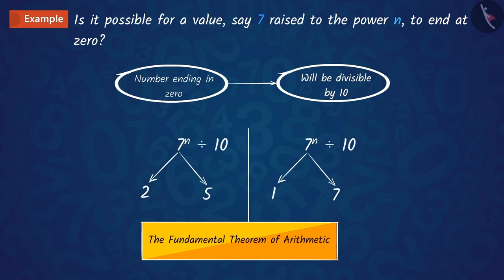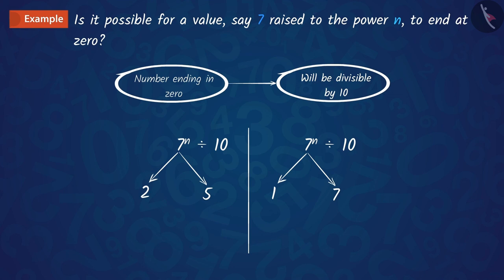So, the uniqueness of the fundamental theorem of arithmetic guarantees that there are no other primes, that is, 2 and 5, in the factorization of 7 raised to the power n.